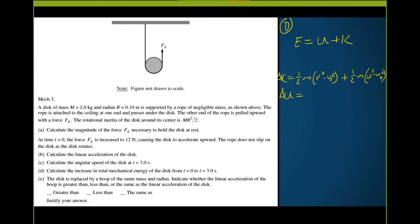Since we started with zero velocity and are looking for change in height: Δh = at²/2. If acceleration is a, velocity is at, and displacement is ½at². So the change in potential energy is mg·(at²/2).